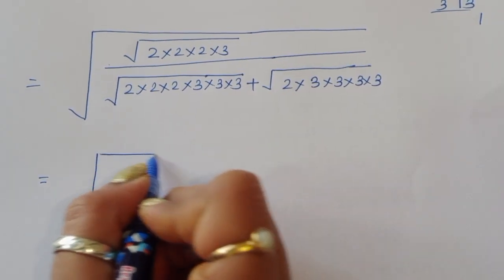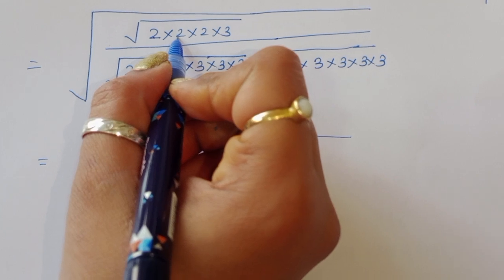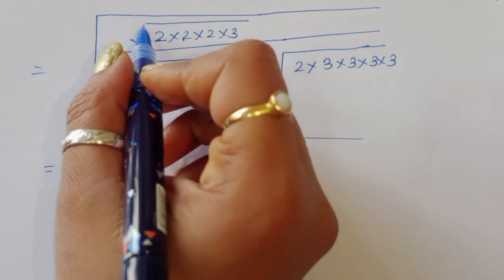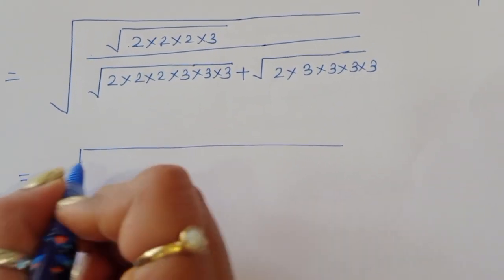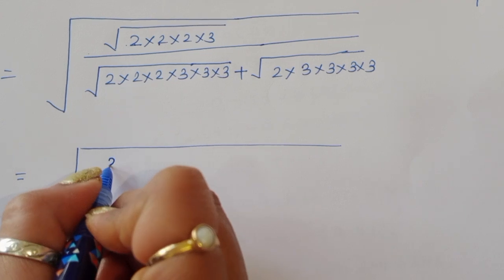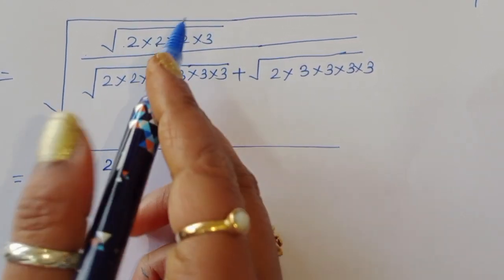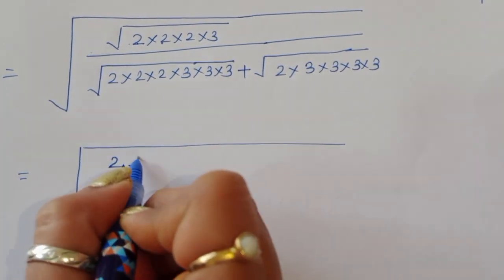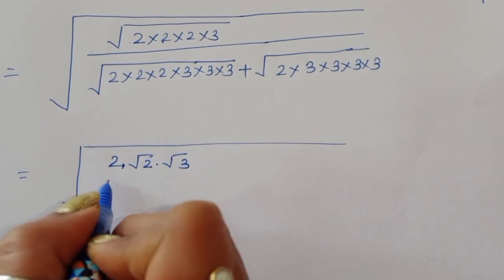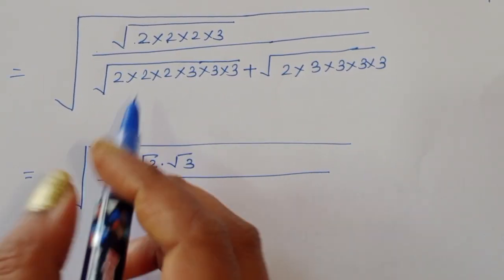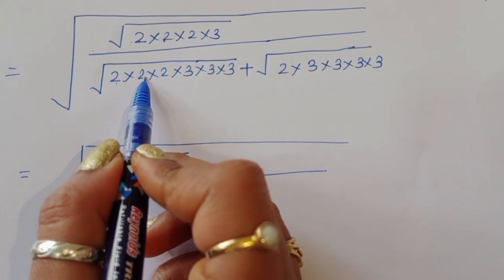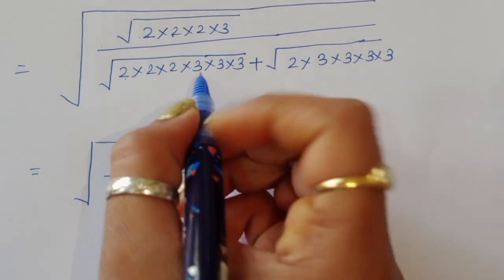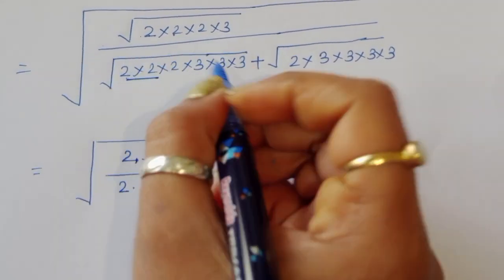Now we simplify. In the numerator, 2 to the power 4 — taking the square root of 2⁴ gives us 2 outside, leaving square root of 2 times square root of 3. In the denominator for 216, 2⁴ gives 2 outside.